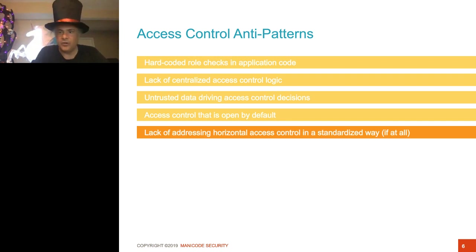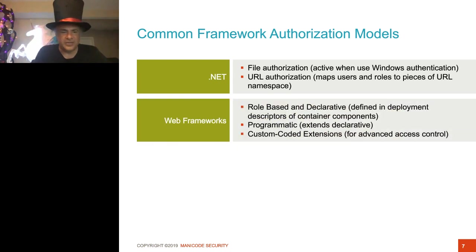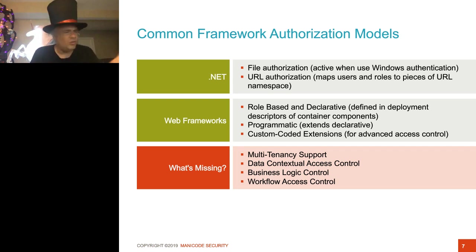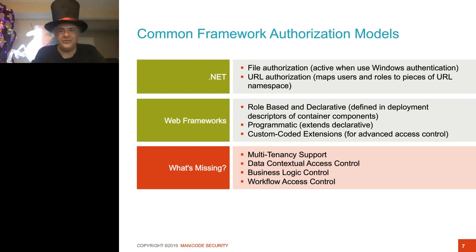So what's the problem? A lot of our frameworks support access control out of the box that's role-based, and we're encouraged to use it. The critical things we need — multi-tenancy, having different rules for different customers that use our software, and data-specific access control — when I'm trying to control access to an individual piece of data or an individual row in a database, that kind of granular access control is almost never dealt with well within our frameworks and software. There are other issues like workflows and business logic as well.